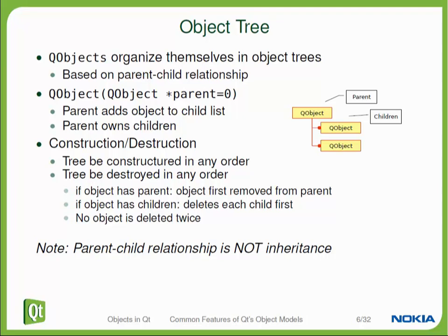This doesn't mean that you cannot delete a QObject explicitly at a certain point in time. When you do so, the object unregisters with its parent and will also delete its children. If this system is applied properly, then it leads to pretty stable and maintainable code, and it makes sure that no object is deleted twice but every object is deleted.